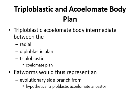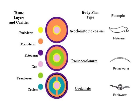Coelomate animals are those having a true body cavity. In the tissue layers and cavities diagram, endoderm is shown in yellow, mesoderm in skin color, and ectoderm in purple. The gut is shown in light purple. Pseudocoelom, the false body cavity, is shown in green, and the true coelom is shown in blue.